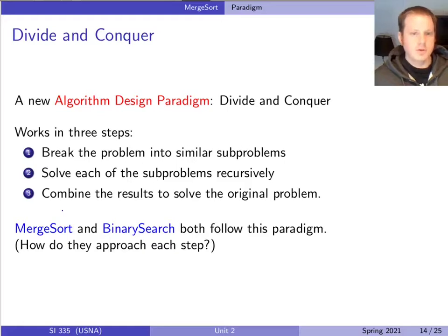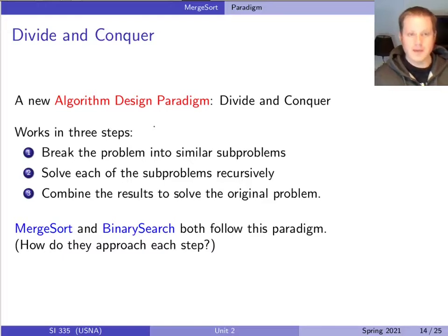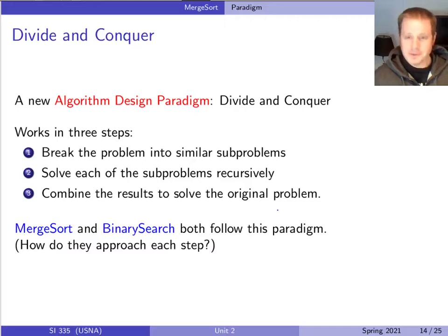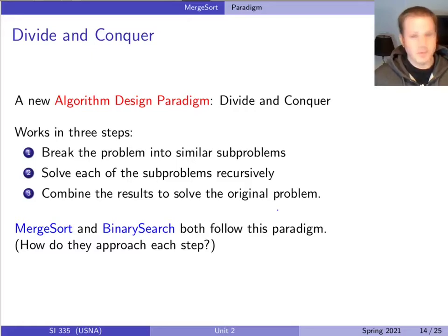The new idea here — and what is called an algorithm design paradigm, a way of thinking about how to design algorithms — is something called divide and conquer. You can think of divide and conquer as being applicable in a lot of aspects in life whenever you want to solve a big problem. The trick is to break it down into smaller problems that you know how to solve more easily, and then try to build up the whole solution.